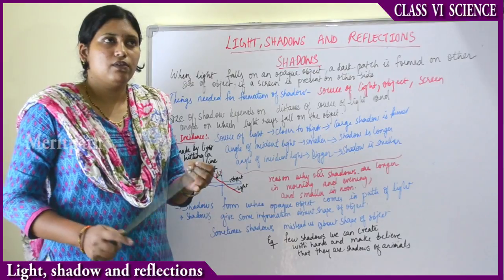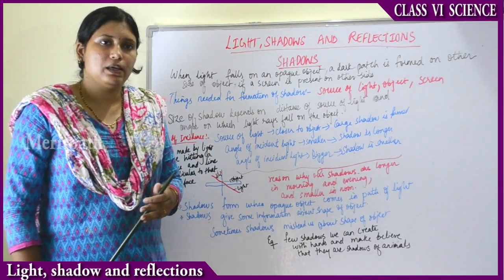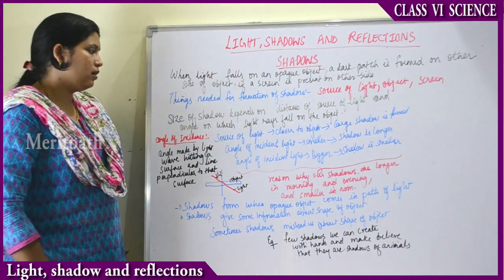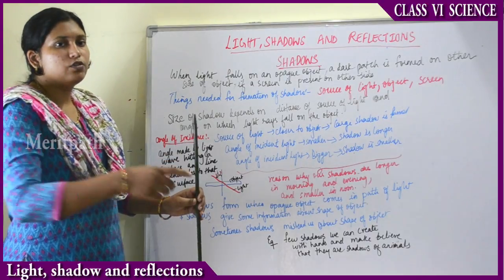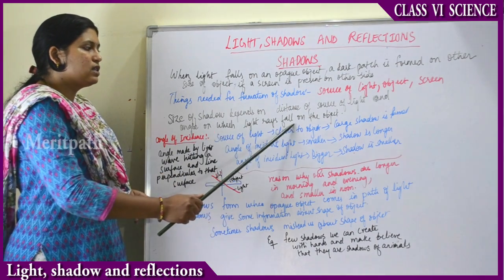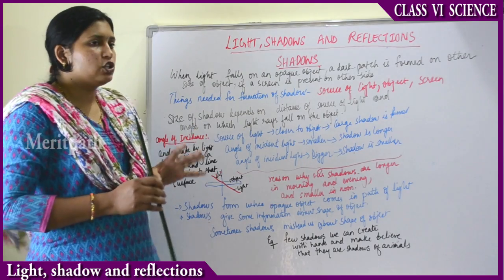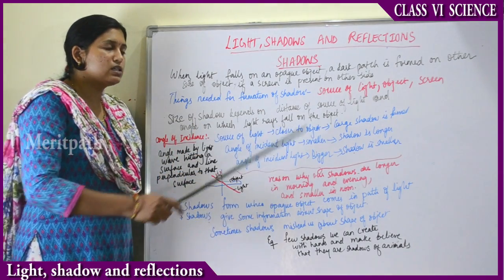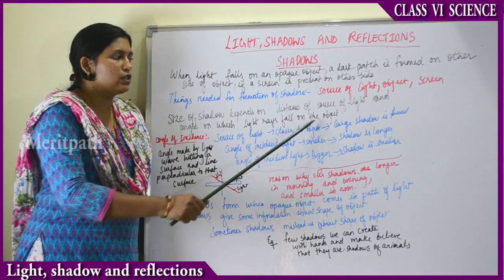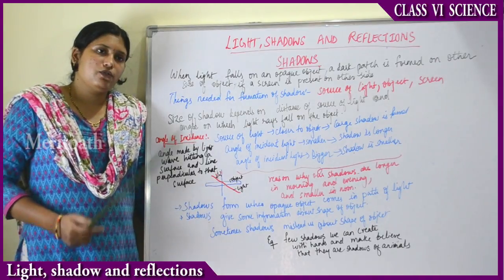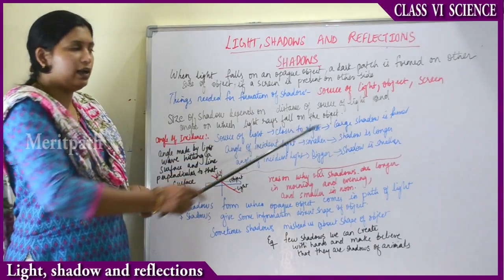Whenever we walk on roads we see shadows of ourselves, buildings, and trees. The size of a shadow depends on two things: the distance from the source of light, and the angle at which the light rays fall on the object. How far the source of light is from the opaque object matters, and from which angle — 90 degrees, 30 degrees — the light is falling also matters.